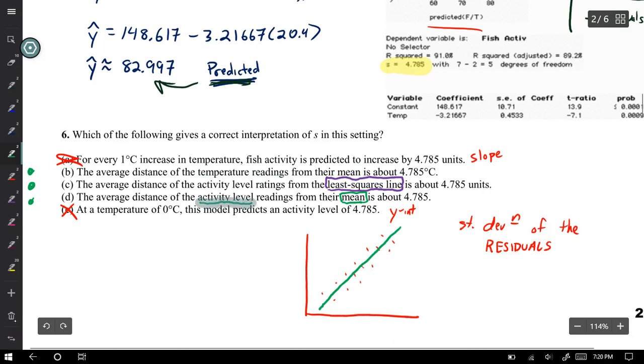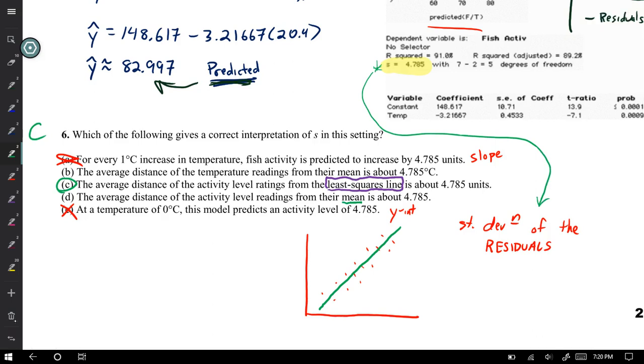Well, this one looks just like choice B, except the average distance of the activity level, while the other one is the average distance of the temperature readings. So variables are different on those. Alright, B, C, or D. At temperature 0 degrees Celsius, the model predicts an activity level of 4.75. That sounds too much like interpreting the intercept, so it is not E.